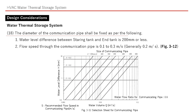Finally, we introduce the size selection method for the communicating pipe. The diameter of the communicating pipe shall be fixed as follows: the water level difference between the starting tank and end tank shall be 200 mm or less, and the flow speed through the communicating pipe shall be 0.1 to 0.3 meters per second, generally 0.2 meters per second. We can use Fig. 3 to 12 for selection. First, enter 0.2 meters per second, and assume 300 liters per minute for each communicating pipe. Then select the larger side, giving us 200 mm diameter.